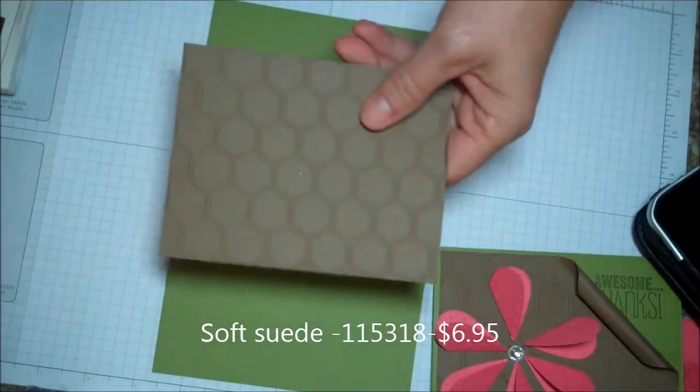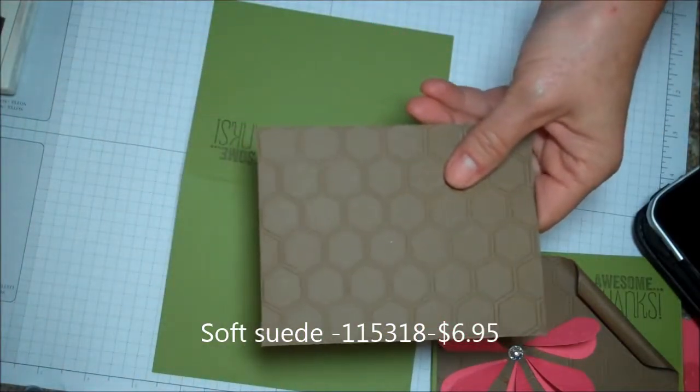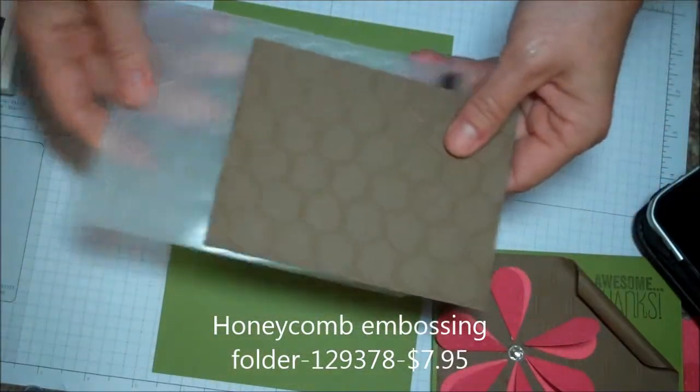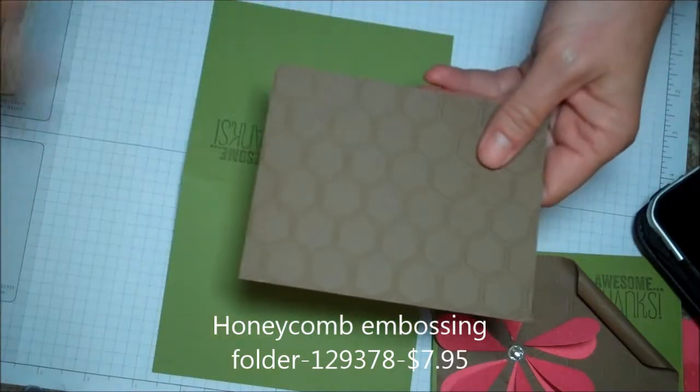I've taken a piece of Soft Suede and I've run it through the Honeycomb Embossing Folder and ran it through my Big Shot. This piece is 4 by 5¼.